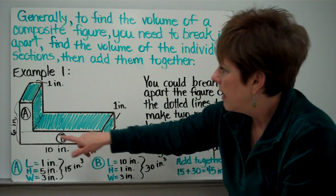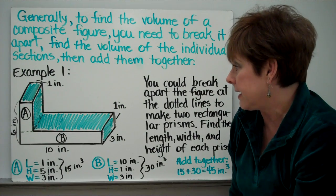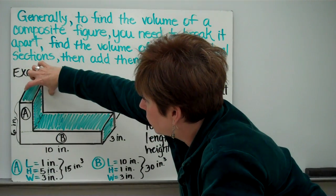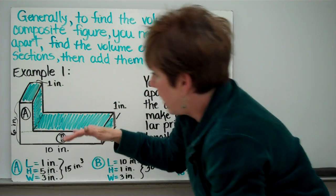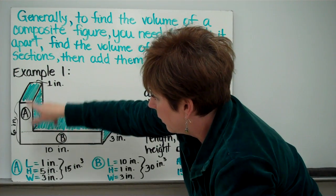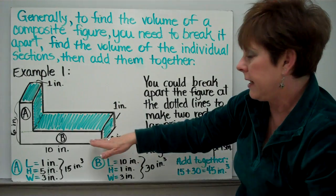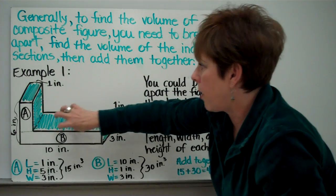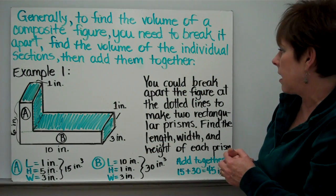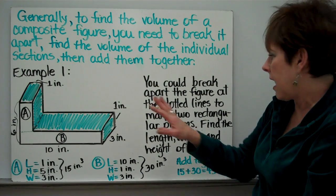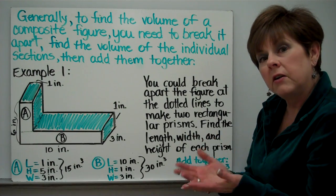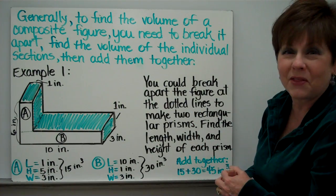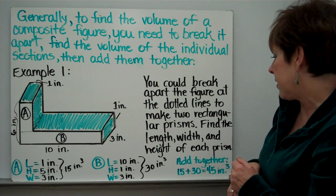This is a figure. You can tell that before we can figure out exactly what its volume is, we have to break it apart. A very logical place to break it apart would be right here — make this one section and make this one section. So you've got one rectangular prism here from here up, and this whole bottom layer right here is a rectangular prism. We try to section it off in logical places. You could break apart the figure at the dotted lines to make two rectangular prisms. You will still find the length, the width, and the height — that's the formula you need for volume, whether it's a rectangular prism or not.